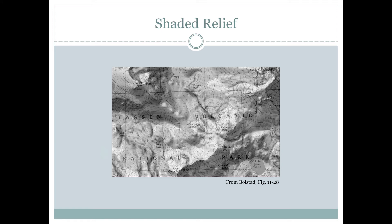Here's a much more detailed area around Lassen Volcanic National Park, and we can see the same sort of effect happening here. There's a ridgeline through here, and on one side of the ridgeline the terrain is lighter and on the other side the terrain is darker.